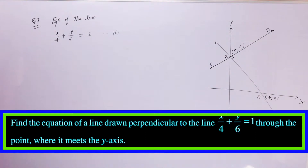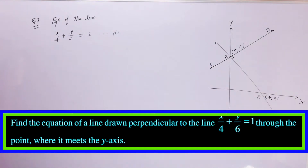Q7. Find the equation of a line drawn perpendicular to the line x/4 + y/6 = 1, through the point where it meets the y-axis.